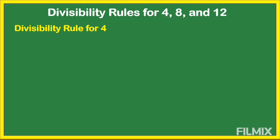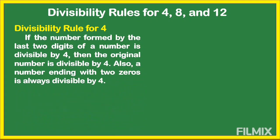How do we know that a number is divisible by 4? If the number formed by the last two digits of a number is divisible by 4, then the original number is divisible by 4. Also, a number ending with two zeros is always divisible by 4.